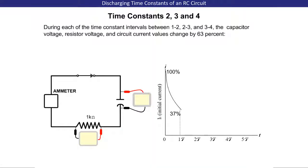Time Constants Two, Three, and Four. During each of the time constant intervals between 1 to 2, 2 to 3, and 3 to 4, the capacitor voltage, resistor voltage, and circuit current values change by 63%. Here is Time Constant Two.